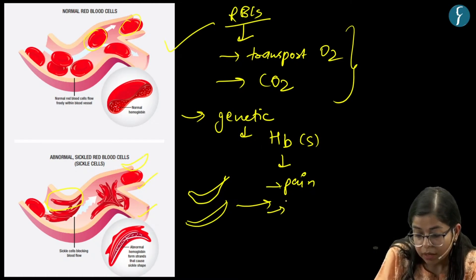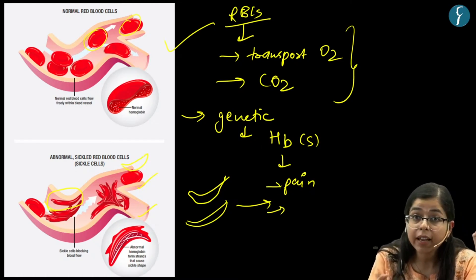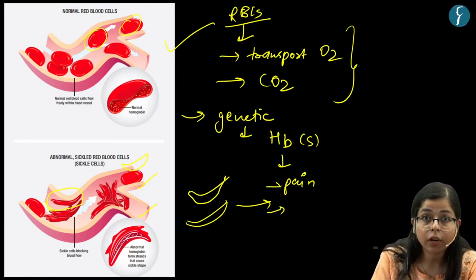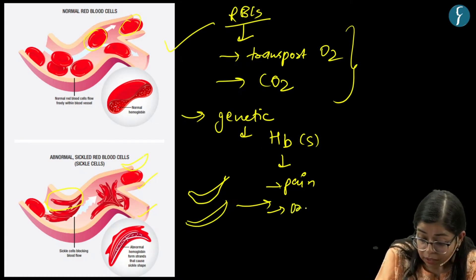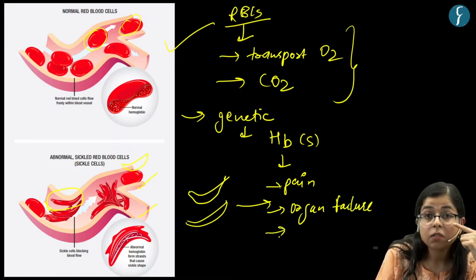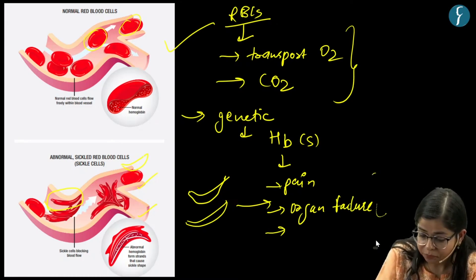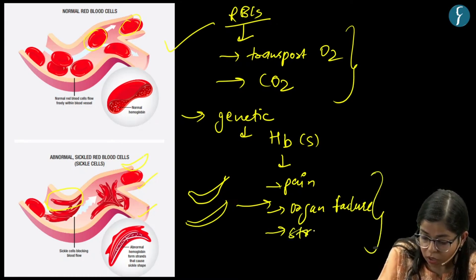As oxygen is vital for the functioning of any organ in the body, ultimately the person is going to die from organ failure. It is also characterized by various other ailments like stroke. This is all about sickle cell anemia.